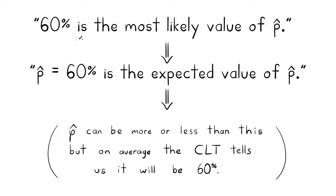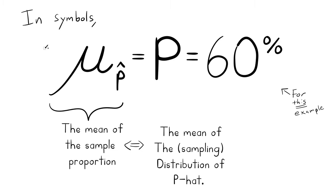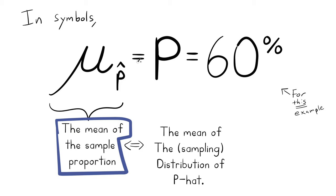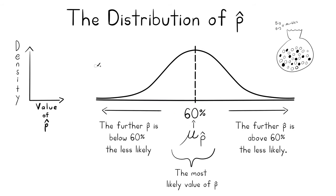What is the most likely sample proportion? Since 60 percent of all the marbles are black, a sample proportion of 60 percent is the single most likely sample proportion to observe. It's certainly not guaranteed, but if you had to bet, 60 percent is the number to put your money on. We call this the expected value of P-hat. In symbols, the mean mu with a subscript P-hat equals the population proportion P. So 60 percent would be right in the middle of the distribution, with values further above or below being less likely.